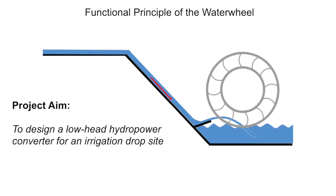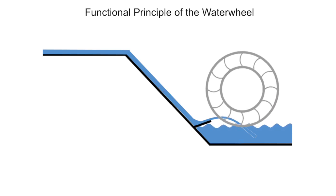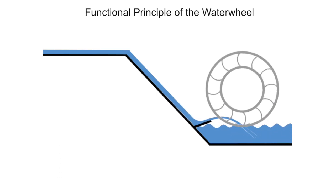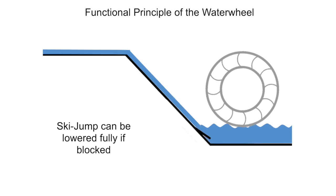We based our design on an undershot water wheel because it maximizes the height difference of the water. A ski jump was used to direct all the flow into the blades, with a gap between them to allow debris to pass through. The ski jump can also be lowered fully to allow water to still pass through in case of wheel malfunction.